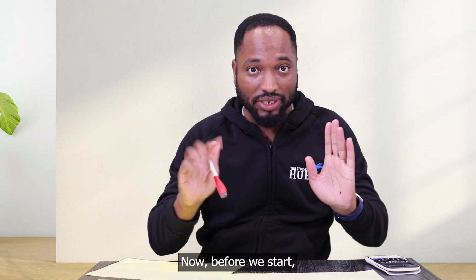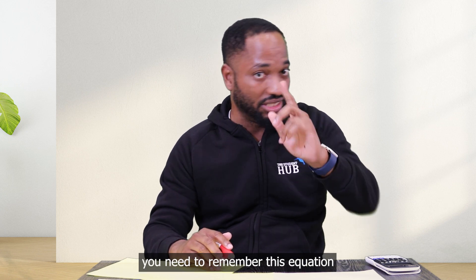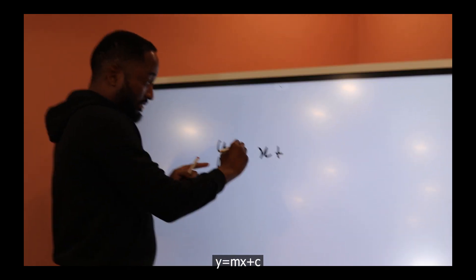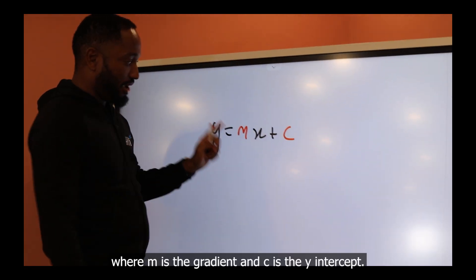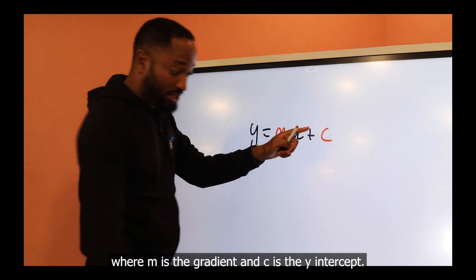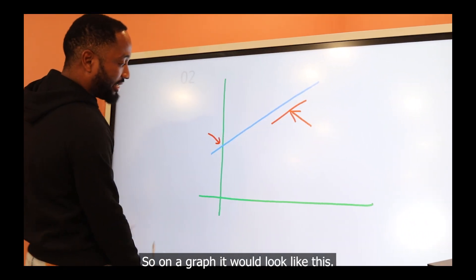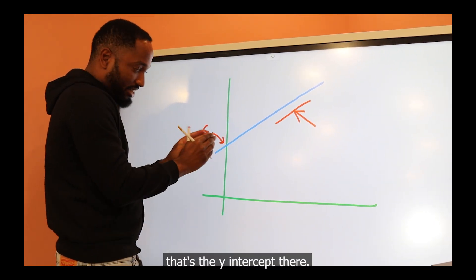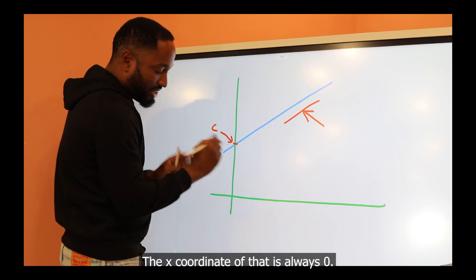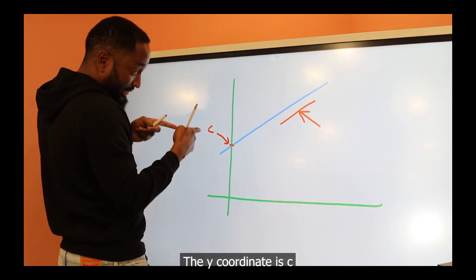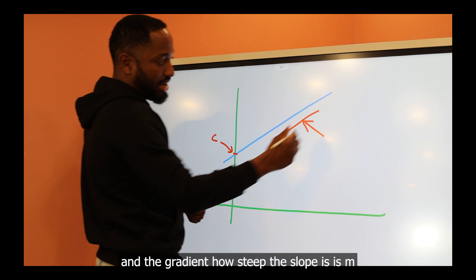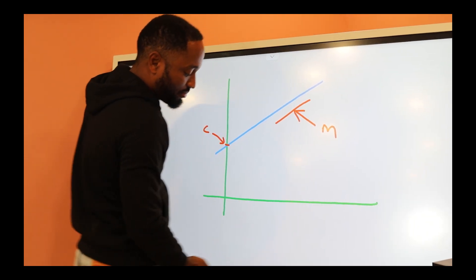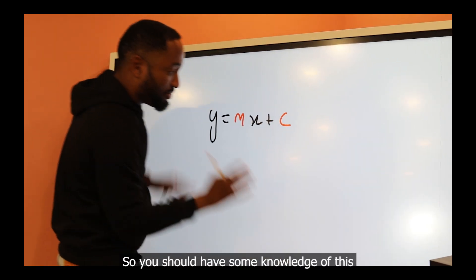Linear models. Before we start, you need to remember this equation: y = mx + c, where m is the gradient and c is the y-intercept. On a graph, it would look like a straight line. The y-intercept c is where x equals zero, and the gradient m is how steep the slope is.